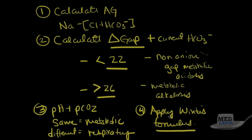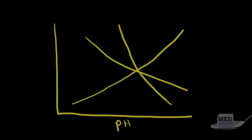The best way to practice this is through questions, but first let's cover what causes each type of disorder. Going back to our graph with pCO₂ on the y-axis and pH on the x-axis, in the region of metabolic acidosis there are two types: anion gap and non-anion gap metabolic acidosis.